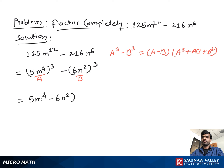(5m⁴ minus 6n²) times (25m⁸ plus 30m⁴n² plus 36n⁴), and this is our final completely factored form.